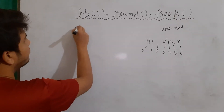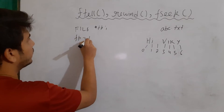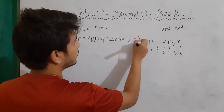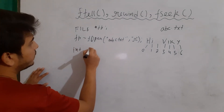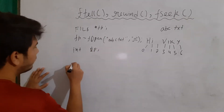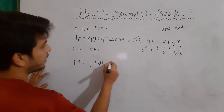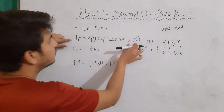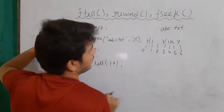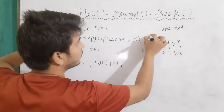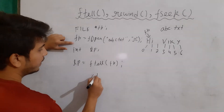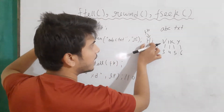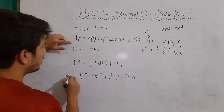Let's say we have created the file pointer and opened our file in read mode — abc.txt with 'r'. Now let's create a variable: int lp. If I write lp equals ftell and pass it fp, then it will tell me the current location of the file pointer. When the file is opened in read mode, fp is going to be pointing at the starting of the file. So if I write printf %d lp, it will give me output as 0, because fp is currently pointing to the 0th location.